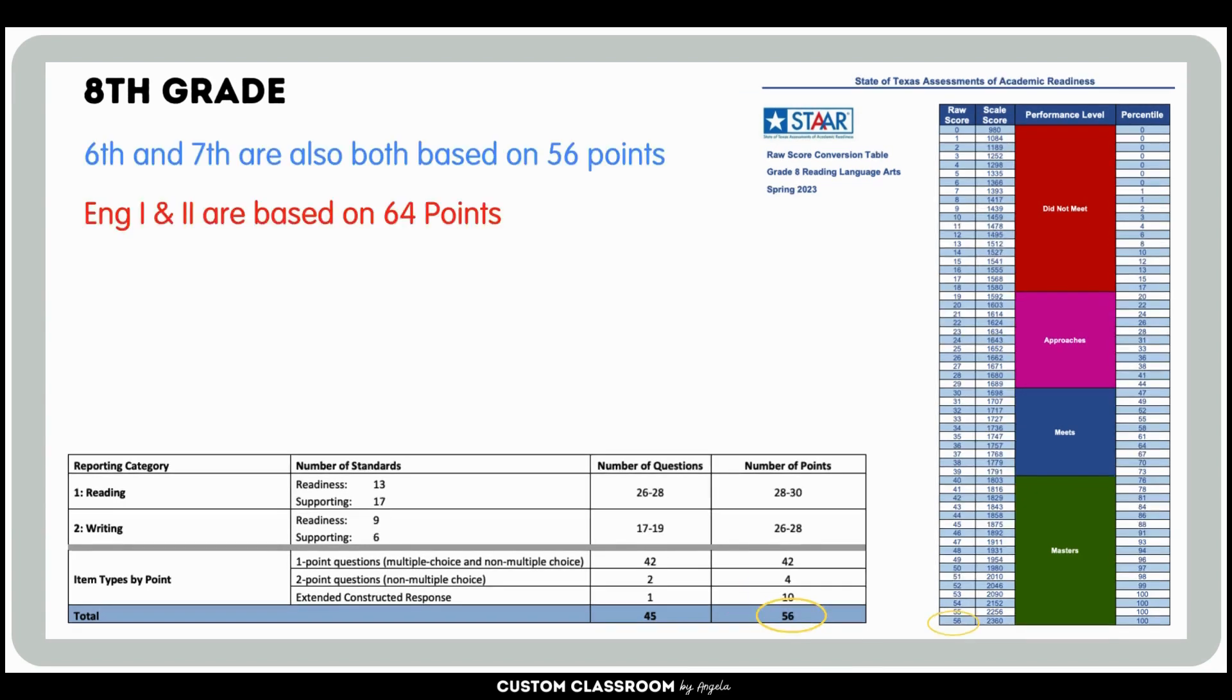Now let's look at an 8th grade example. As we can see, the 8th grade test has 45 questions, which total 56 points. Now 6th and 7th grade are also based on the same number of 56 points. English 1 and 2 are based on 64 points. 10 of these is still coming from all these tests on the ECR question.